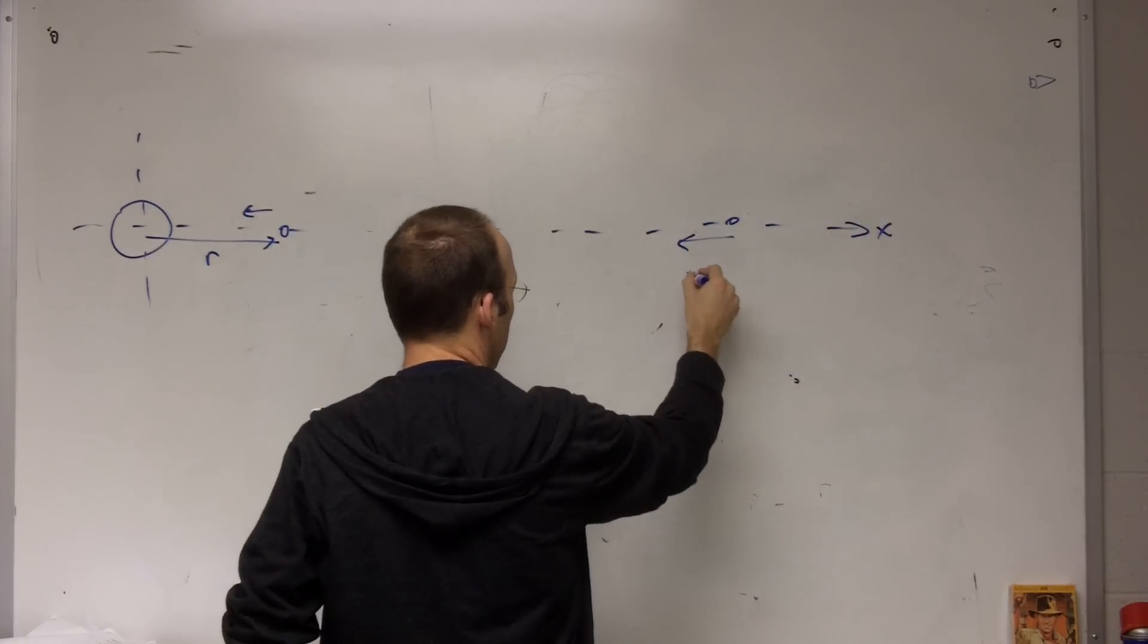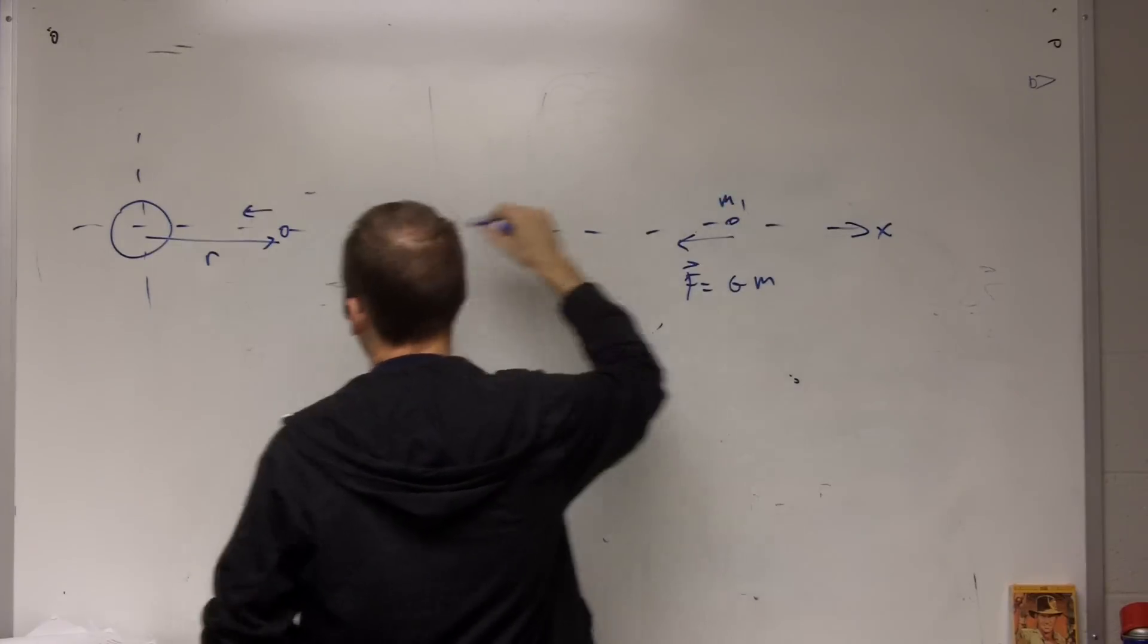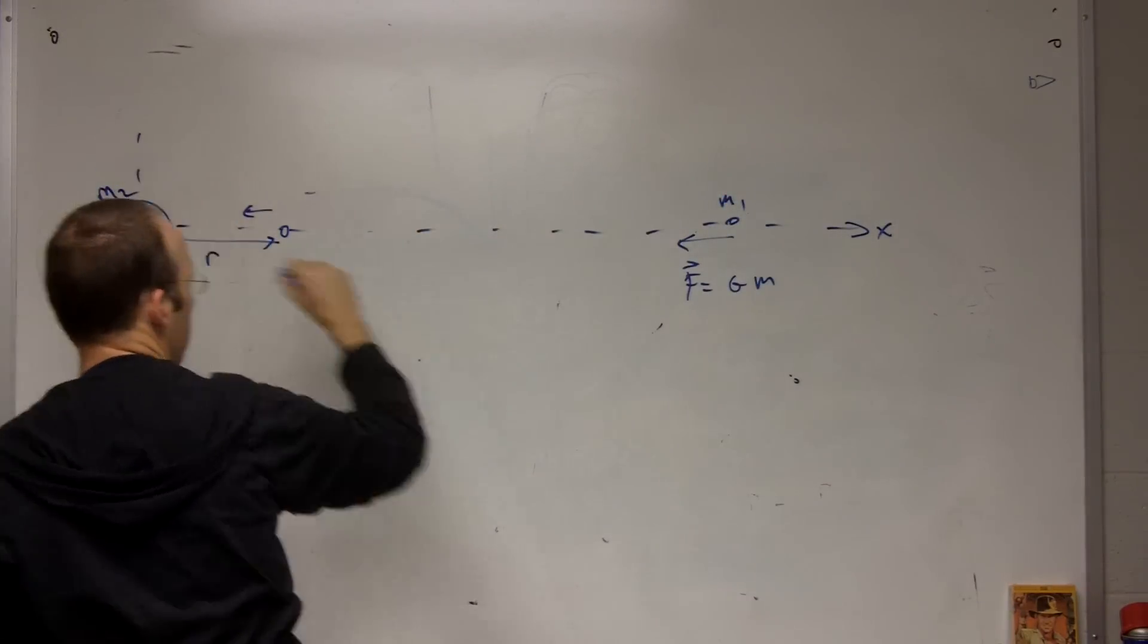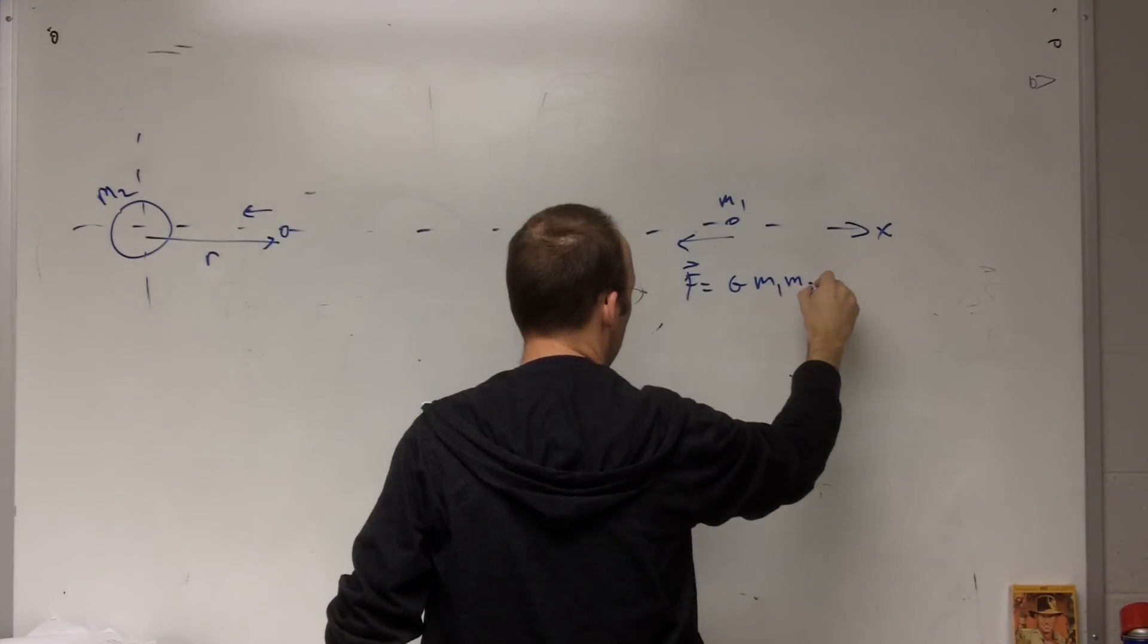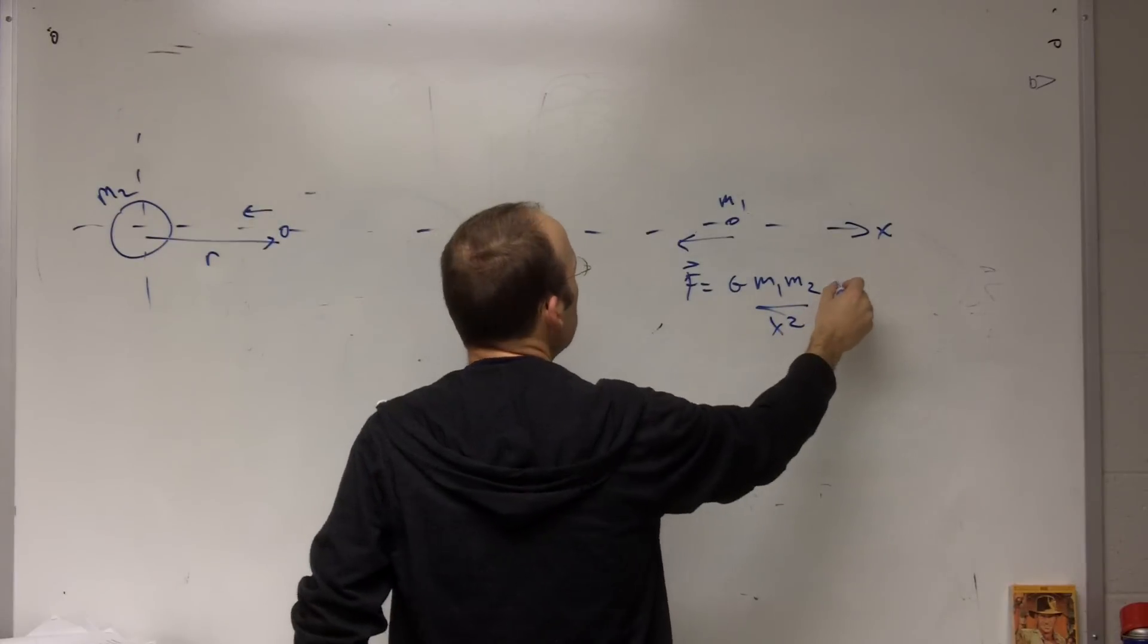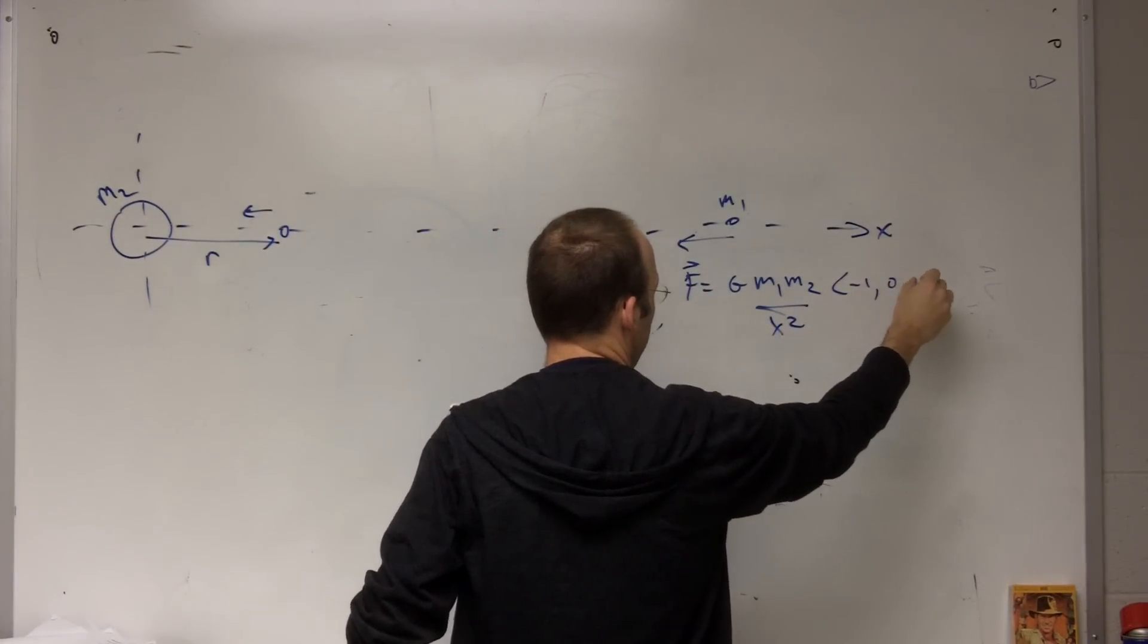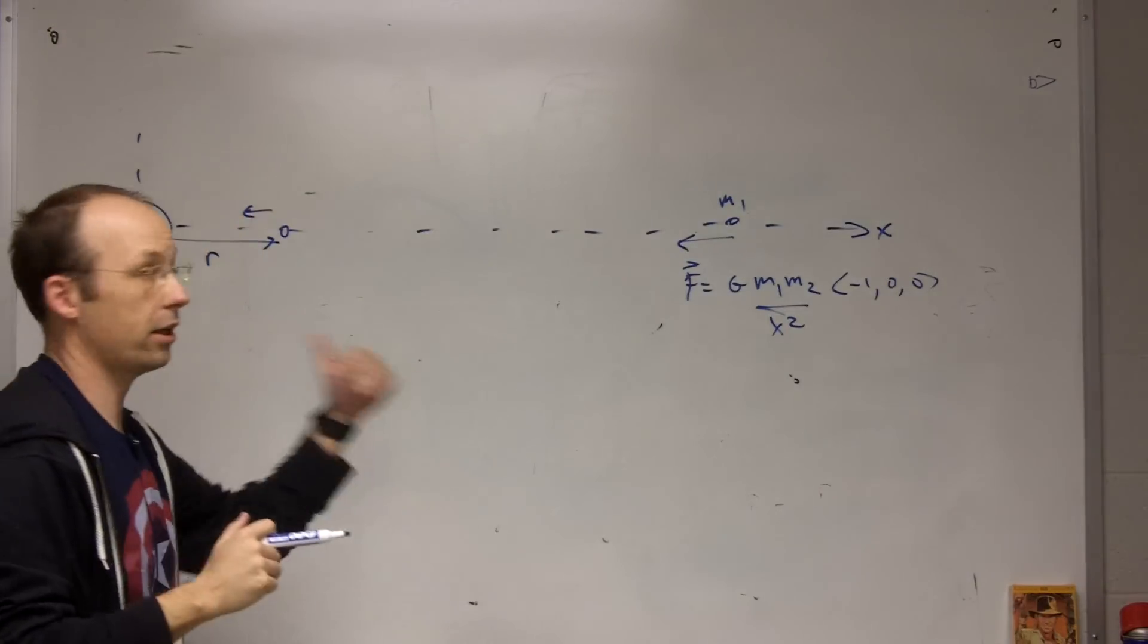Then here f is going to be g, this is m1 and this is m2, m1 m2 over x squared, that's the force, and then it will be negative 1, 0, 0. That's the direction of the force.